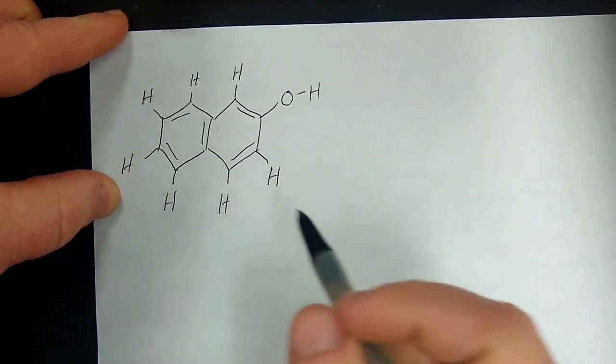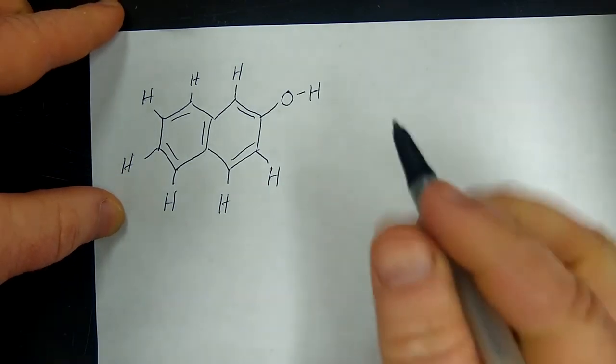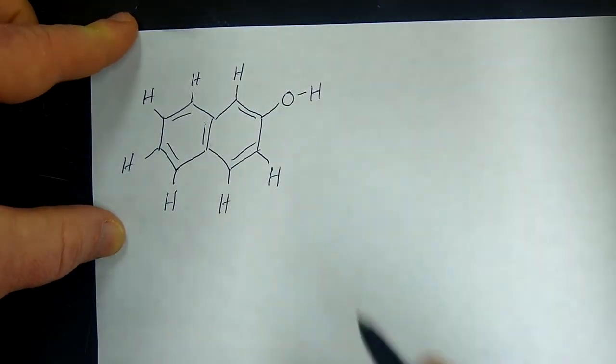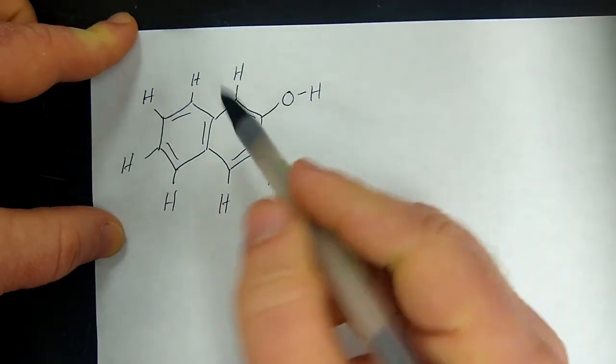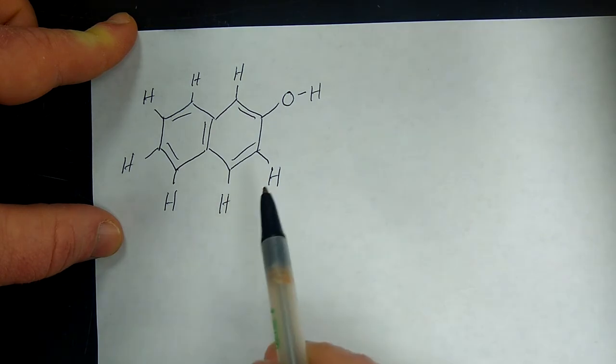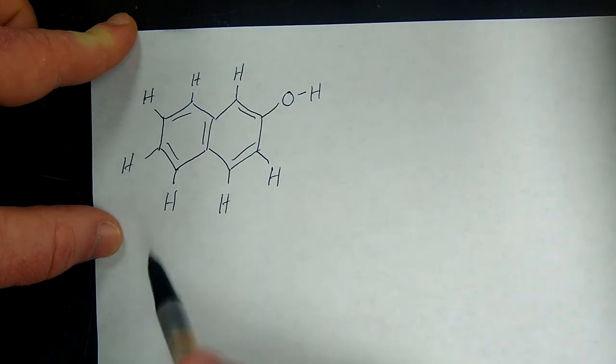The sample I used in our practice one in experiment nine was two-naphthol. Just looking at the structure you can see seven aromatic protons attached to the ring and one aromatic proton for the alcohol.